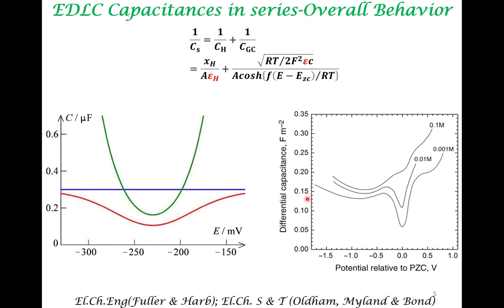What is not captured is the asymmetry that emerges at high concentration — that is, the difference in capacitance behavior when potential is varied toward positive versus negative regions. This remains a deficiency of the Stern model, which we will address in the next lecture. The Stern model does, however, do a good job of getting the absolute magnitude of the capacitance right. The differential capacitance is of the order of 0.15 F/m², which compares well with experimental observations, giving confidence that many aspects of the electrode-electrolyte interface are captured.